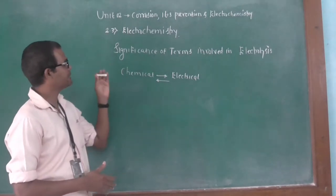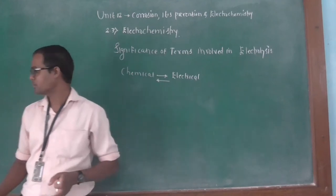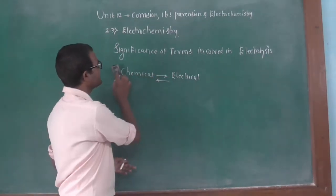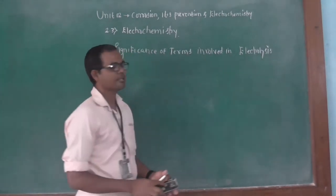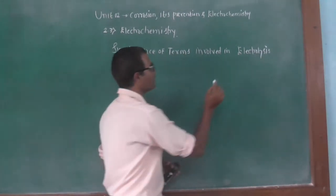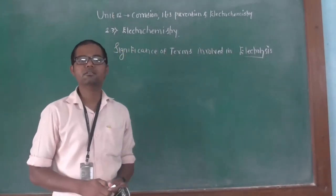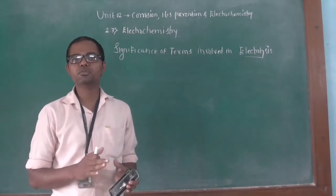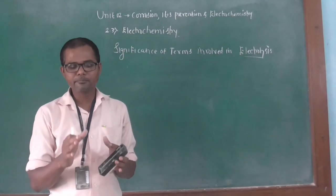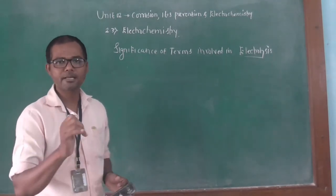Now we are going to study some of the significant terms involved in electrolytes. First of all, what does it mean by electrolysis? Electrolysis is a process by which the chemical decomposition of an electrolyte takes place when electrical current is passed into the electrolyte. That process is said to be electrolysis.